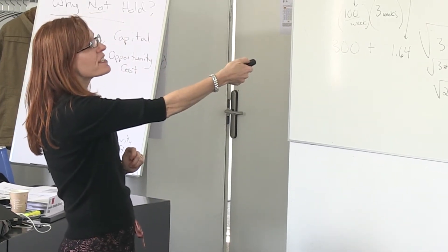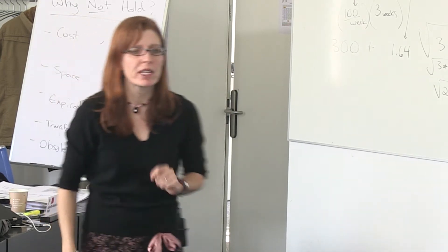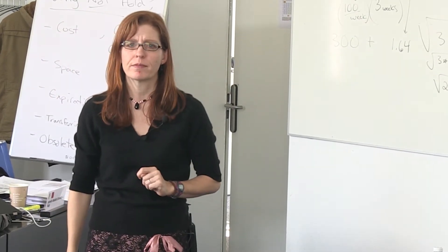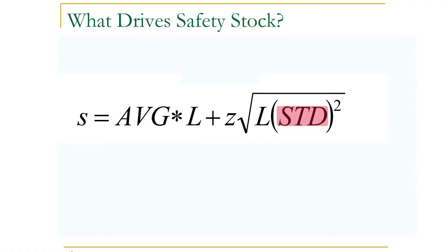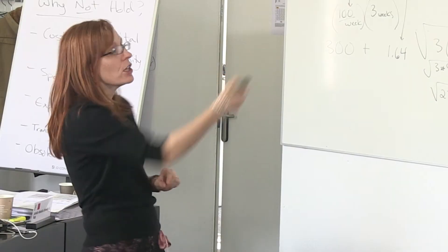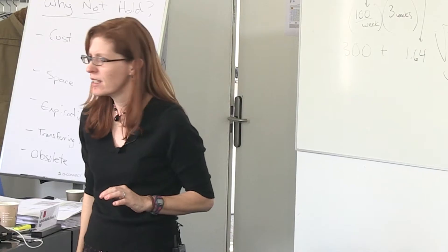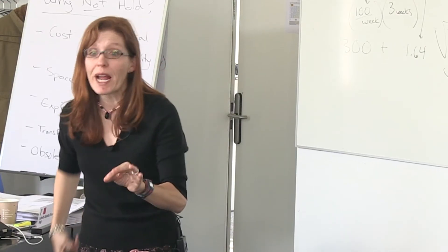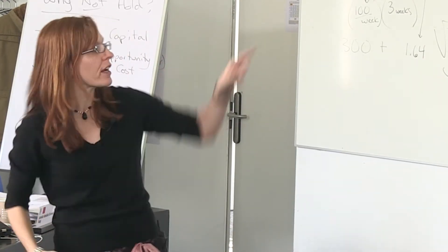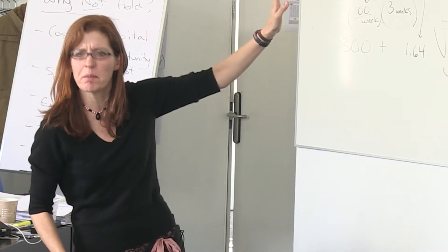Safety stock gets bigger when my demand is more variable. Where does that come into the formula? Standard deviation — exactly, right up here. What about the forecast error? You don't directly see it on there, but it's related to that standard deviation. It's the same thing.